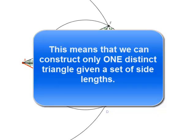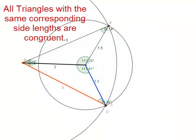So what we've done here is provided evidence to support the side-side-side postulate, which relies on the fact that all triangles that have the same corresponding side lengths are congruent.